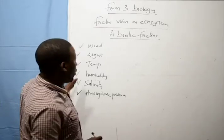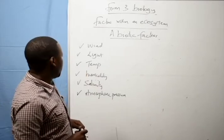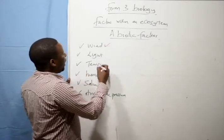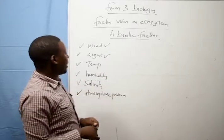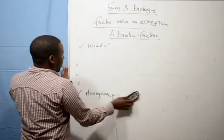Now, for our lesson today we are going to look at only two factors within the ecosystem. We are going to look at one factor, wind, and then discuss light as a factor within the ecosystem. Let's look at wind first.